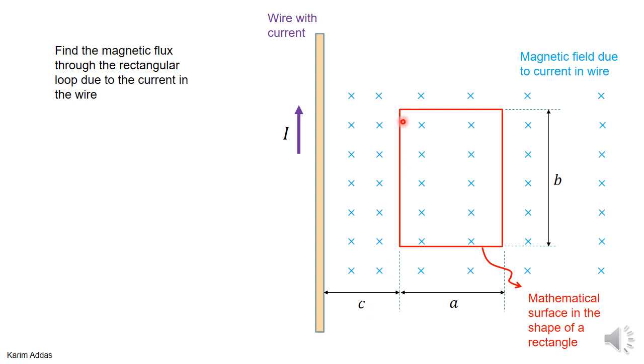It's of length b and width a, and it's just a pure mathematical construction. How would you find the magnetic flux through this rectangle? And the rectangle is—the beginning of the rectangle is at the distance c from the infinite wire.